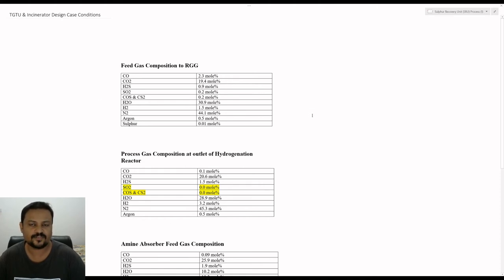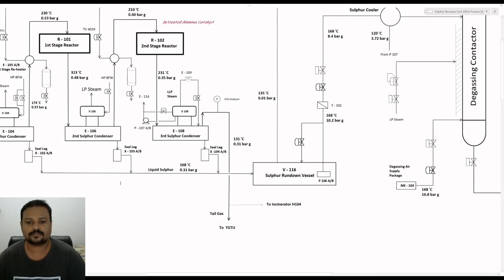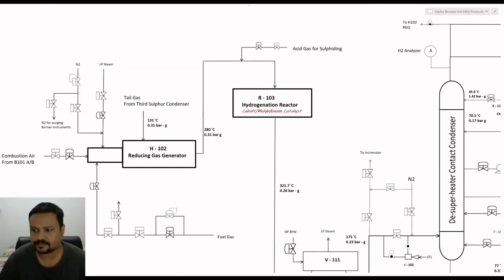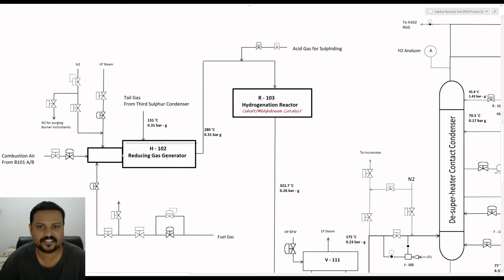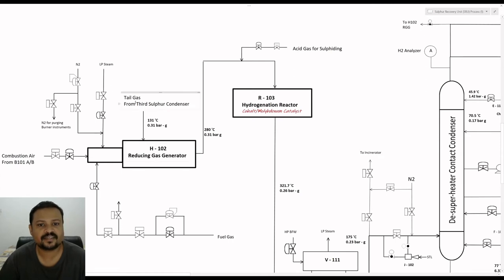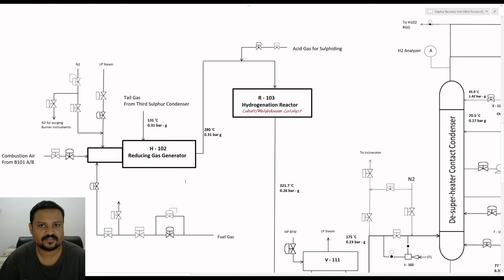Let us go to the process flow diagram of the tail gas treatment unit. The tail gas from the third sulfur condenser will first enter the reducing gas generator. The RGG is basically a furnace in which combustion takes place with fuel gas along with combustion air under substoichiometric conditions, and the hot gases will be mixed with the tail gas from the third sulfur condenser. The tail gas will come at a temperature of 130 degrees Celsius at 0.3 bar and will be heated up to 280 degrees Celsius with the help of the RGG. The purpose of the RGG is to produce reducing gases like hydrogen and carbon monoxide in order to carry out hydrogenation and hydrolysis reactions inside the hydrogenation reactor.